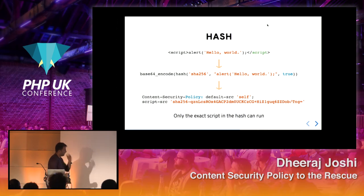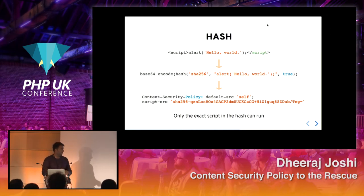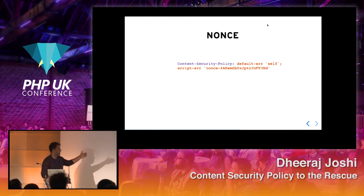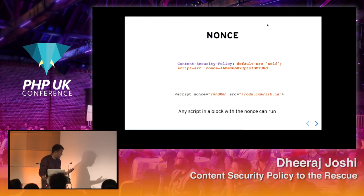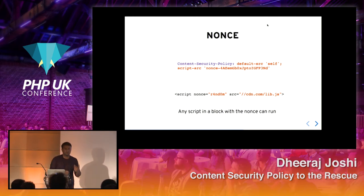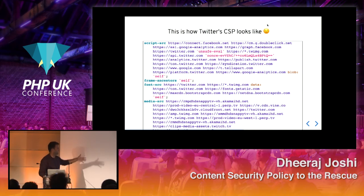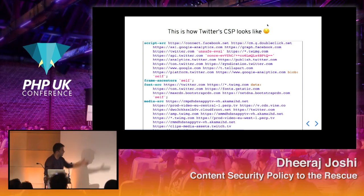These hash approaches are sometimes very hard to maintain when you have more than 10 inline scripts that frequently change — it's hard to keep changing the application and coordinating with your DevOps team to update headers on the server. So we have another approach called nonces, where you define a nonce in your CSP header. This nonce has to be cryptographically securely random, and the browser will allow only scripts whose nonce attribute matches the header. This is how Twitter's CSP works — they use the nonce approach along with whitelisting domains.